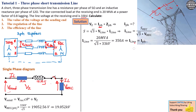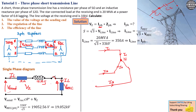It is important to understand that in a star configuration, I_line is the same as I_phase. In a star configuration you have a neutral point with Line 1 carrying current I1, Line 2 carrying I2, and Line 3 carrying I3, and the current flowing onto the line is exactly the same current flowing into the phases. This is not the case in a delta configuration, so it's very important to understand that distinction.